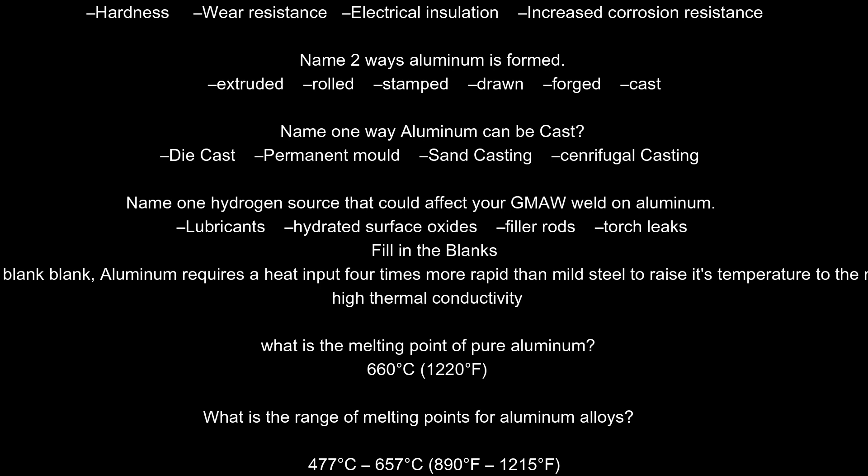Due to its high thermal conductivity, aluminum requires a heat input four times more rapid than mild steel to raise its temperature to the melting point. What is the melting point of pure aluminum? 660 degrees Celsius, 1,220 degrees Fahrenheit. What is the range of melting points for aluminum alloys? 477 to 657 degrees Celsius, 890 to 1,215 degrees Fahrenheit.